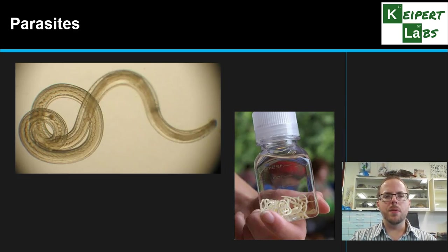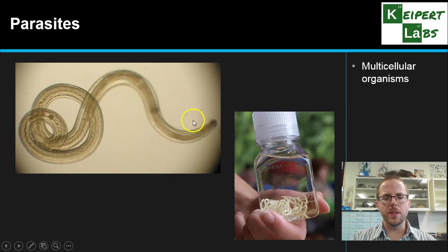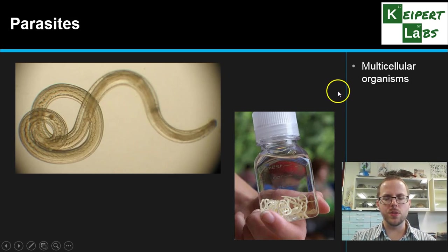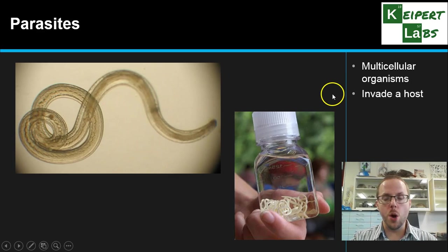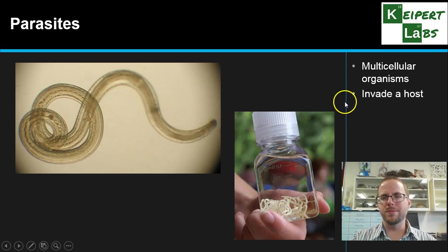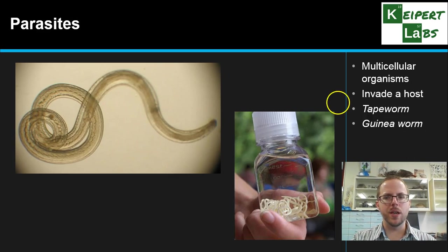Then we get to parasites, which are multicellular organisms in these examples. We're thinking about organisms like this tapeworm and this guinea worm. We define a parasite as something that invades a host and feeds off it or benefits in a way that harms the other organism. The host may not even know they're being harmed — these worms can live inside our gut for a very long time without us being actively aware, but they are still having a negative effect on our body. Tapeworm and guinea worm are two classic examples.